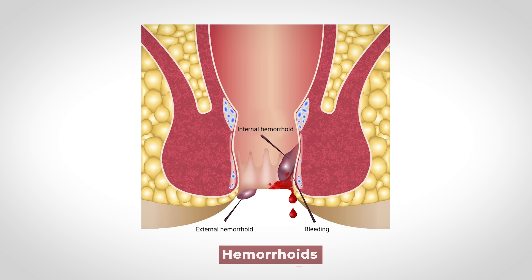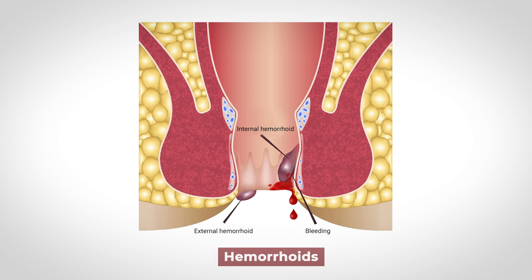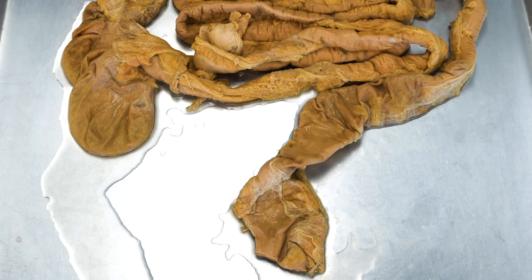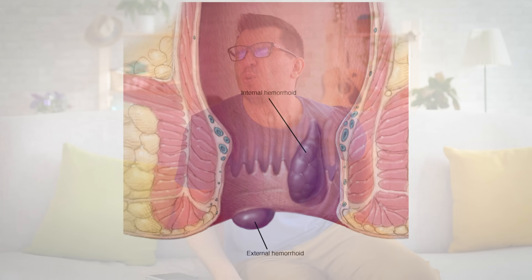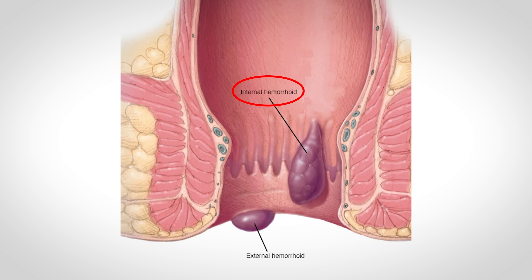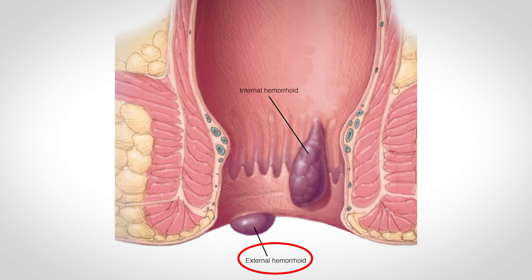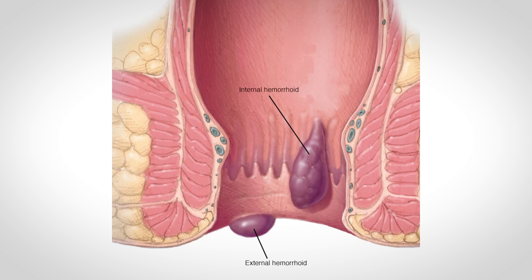Next, we have hemorrhoids — one of the most common causes of rectal bleeding. These are swollen or dilated veins in the rectum or anus, and they can cause discomfort, itching, and bleeding. Hemorrhoids can be internal, meaning they develop inside the rectum, or external, meaning they form under the skin around the anus.